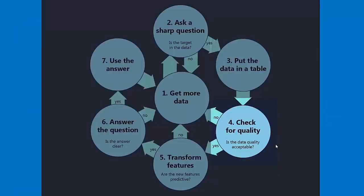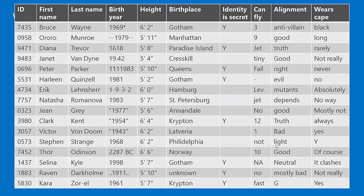After the data is in a table with one row per instance of the target, the next step is to check for quality — make sure the data is acceptable to use. We have a table of data on different superheroes and supervillains, and we want to predict whether or not they wear a cape based on everything else we know about them. When you survey data for quality, there are no shortcuts — you walk through the data column by column.